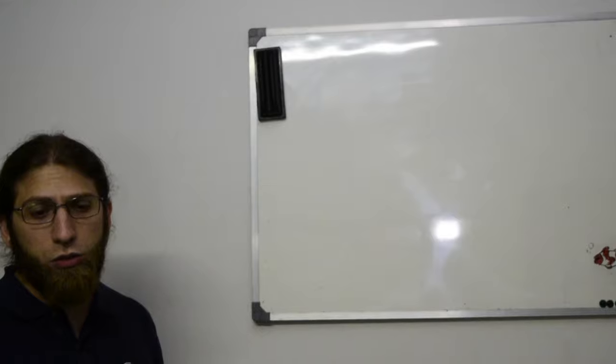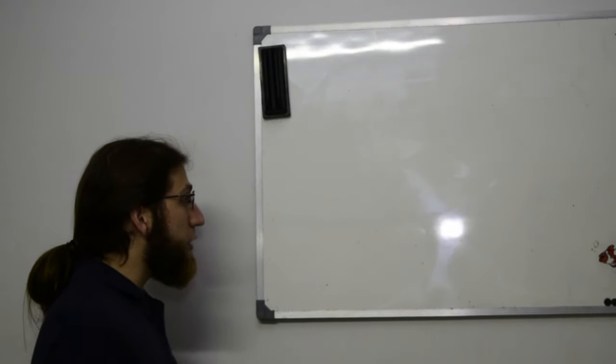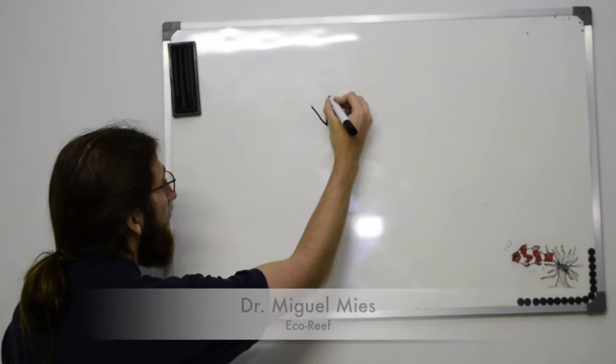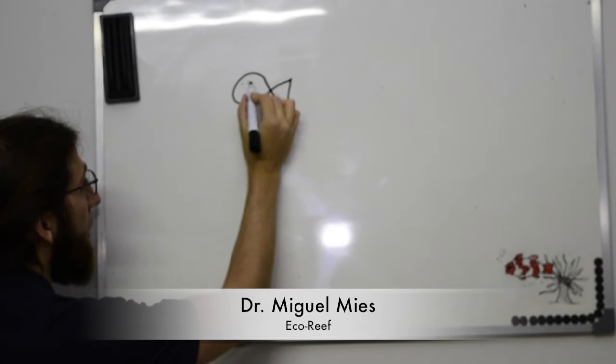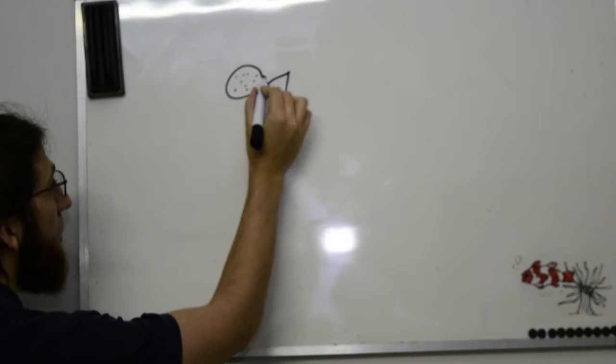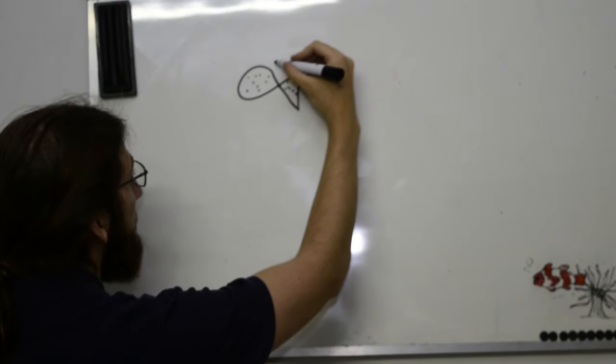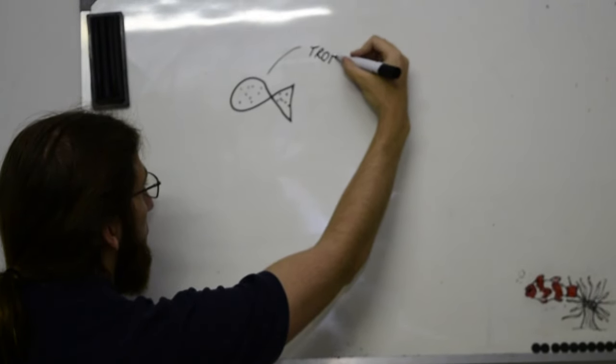O amilodinium e o ictio têm um ciclo de vida muito parecido, e é mais ou menos da seguinte maneira. Eu desenho muito mal, mas você tem aqui o seu peixinho, e ele está cheio de bolinhas brancas. Isso que dá o sintoma de que ele está com amilodinium. E esse estágio de vida dele chama-se trofonte.